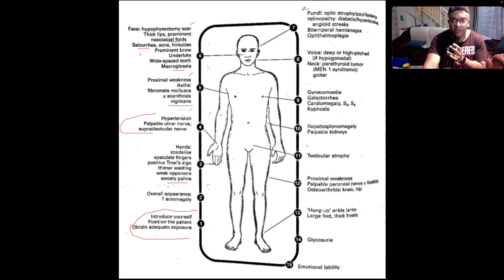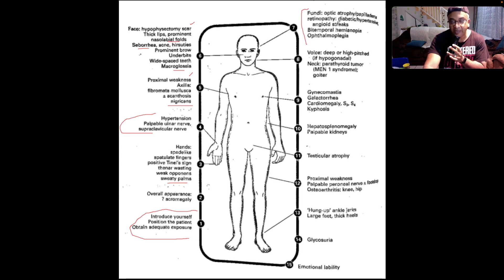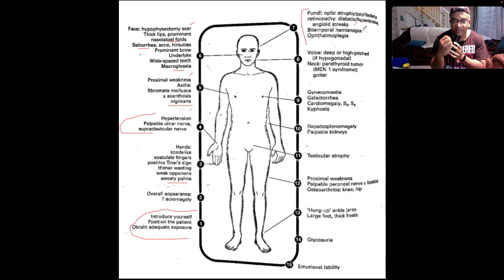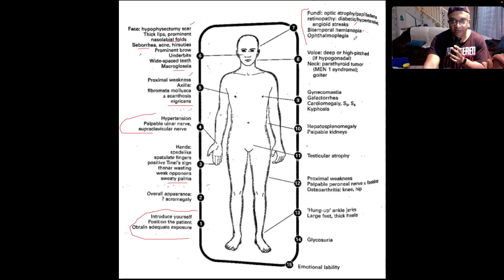Work your way to the fundus. Here we're looking for optic atrophy and papilledema, for retinopathy on the background of diabetic or hypertensive pathology, angioid streaks, bitemporal hemianopia — which is the classic visual field cut you get in the setting of an enlarging pituitary mass — and ophthalmoplegia as well.